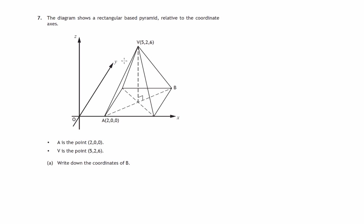Here we have a diagram of a rectangular-based pyramid with X, Y, and Z axes. The vertex V is directly above the centre of this rectangle. We're given the coordinates of A and the coordinates of V, and we're asked to write down the coordinates of B.